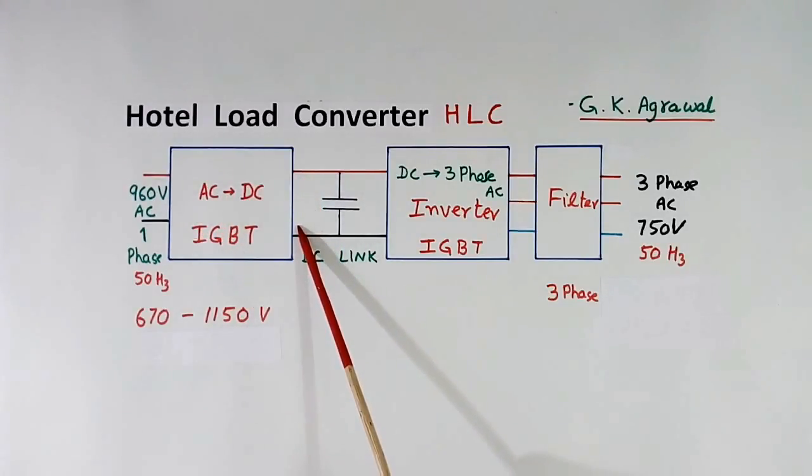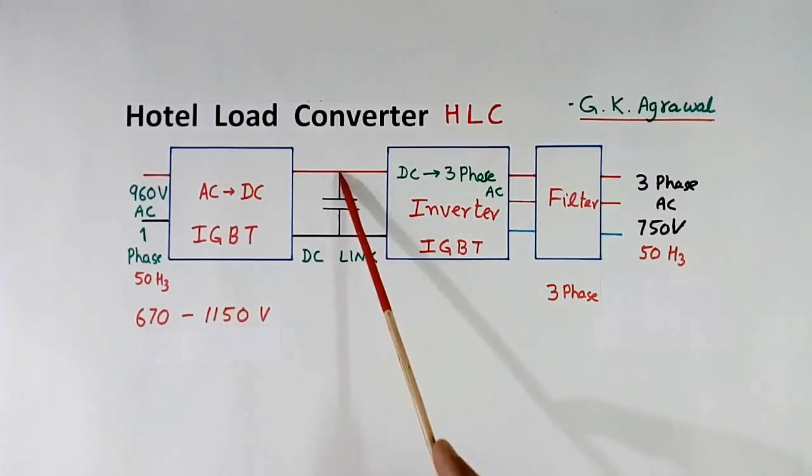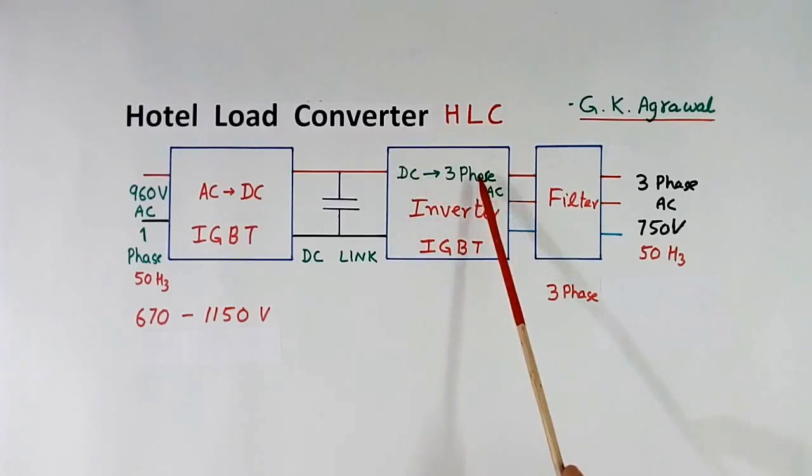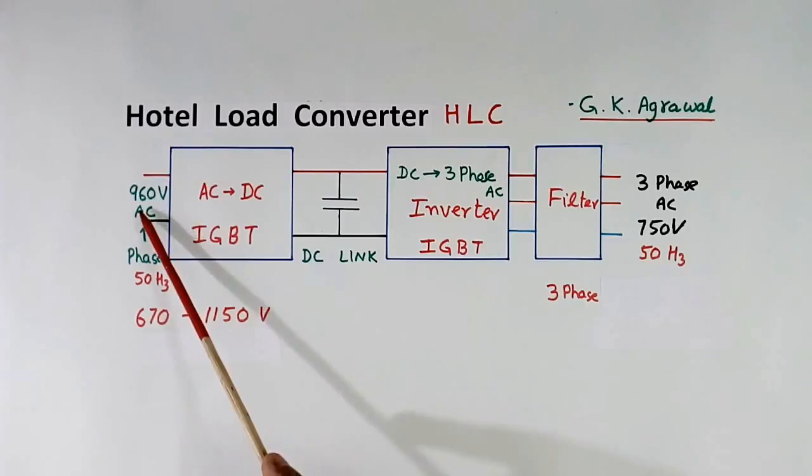This is IGBT based. This is DC link, there is a capacitor which is charged. This inverter converts DC into 3 phase AC. So we get AC here, but this has harmonics, so we require a filter. And here we get less harmonics. So output will come 3 phase AC 750 volt 50 hertz supply. So this hotel load converter converts 1 phase AC 960 volt into 3 phase AC 750 volt 50 hertz.